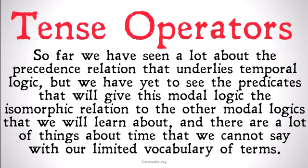So far we've seen a lot about the precedence relation, this kind of key central relation to our instant-based model of time. However, we haven't yet seen what makes temporal logic a modal logic. We haven't seen the kind of predicates that are going to have that isomorphic relation to our other modal logics that we've learned about. And there are a lot of things that just using precedence we can't really express. We have a limited vocabulary.